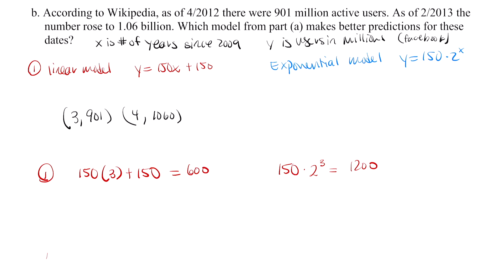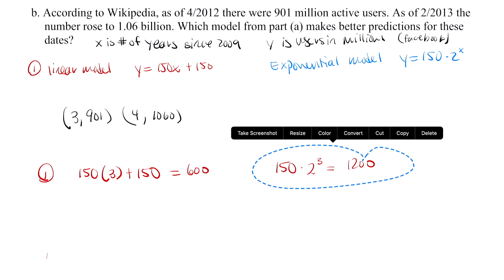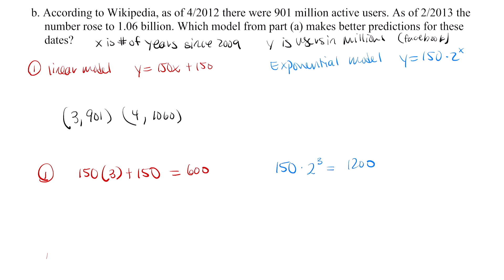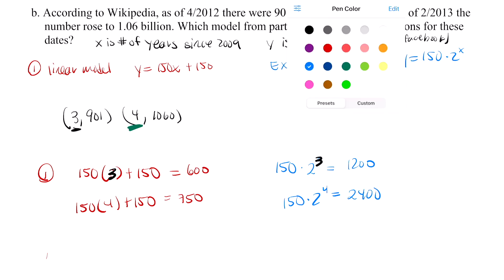Now let's try the second data point. So here we just tried the 3 into both of these. Now let's try the 4. So 150 times 4 plus 150 is 750. Now using the exponential model, we write 150 times 2 to the 4th power. This gives us 2,400. This is where I plugged in 4 for both of these.